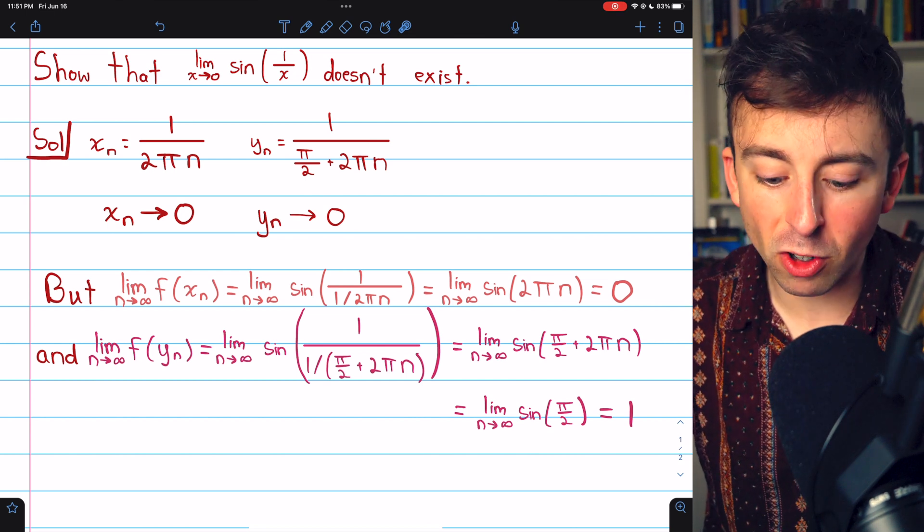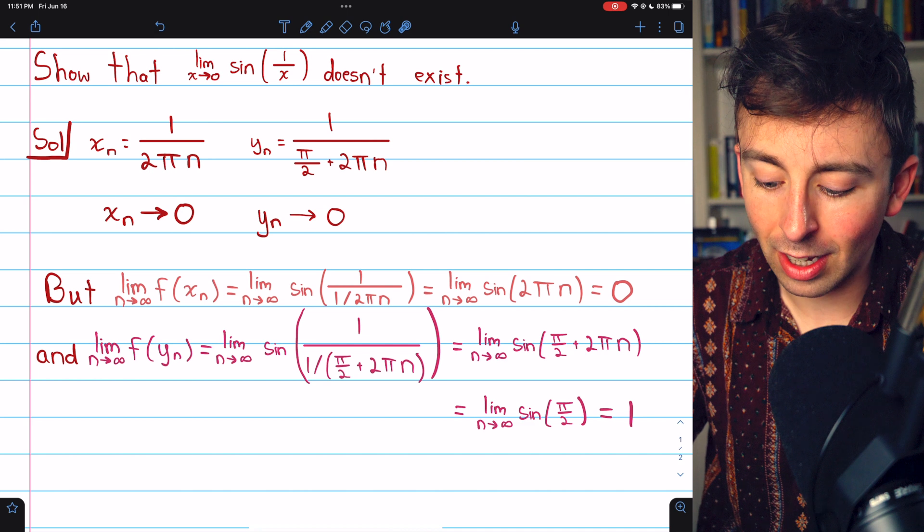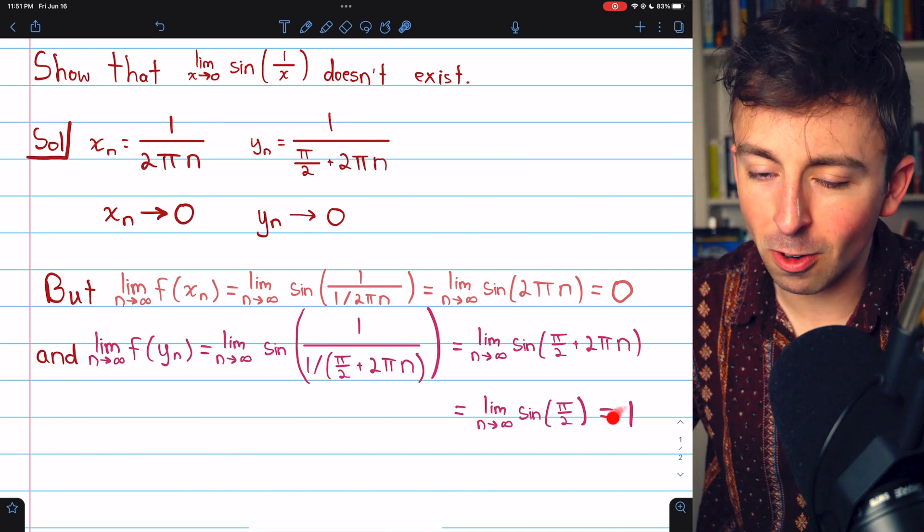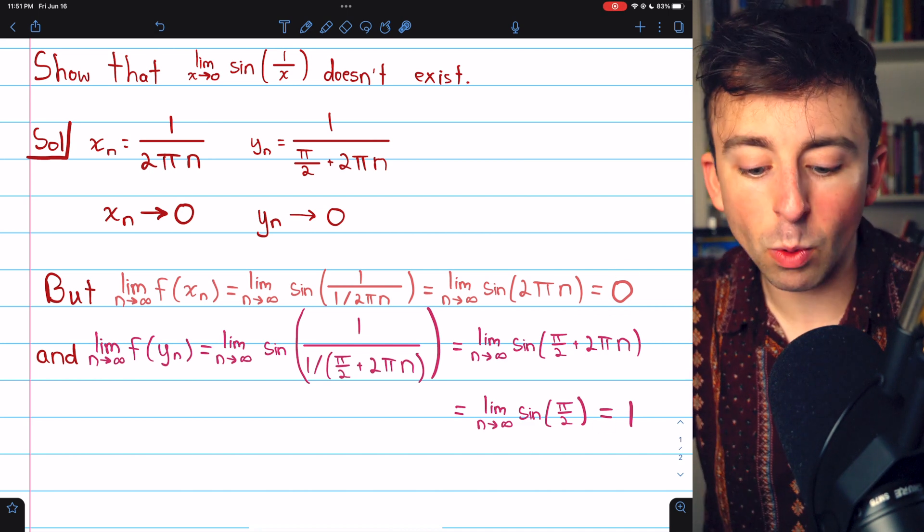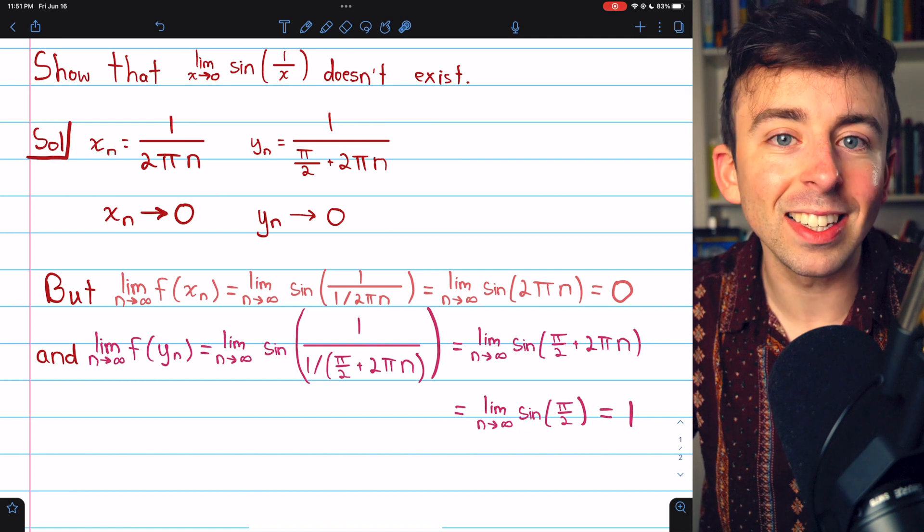So the limits of the images of the sequences are not equal. One is equal to zero. One is equal to one. They're not equal, which shows this limit mustn't exist.